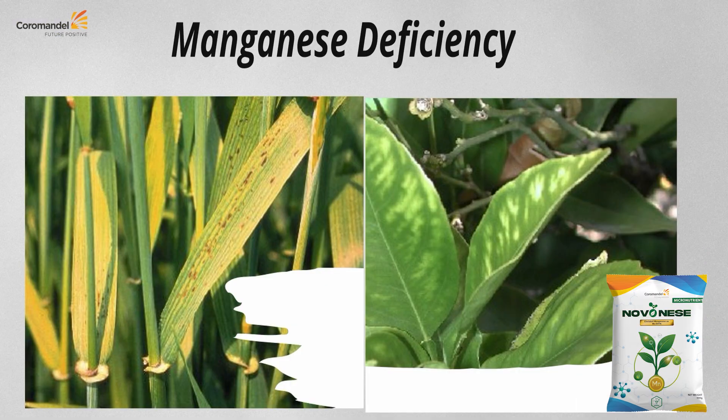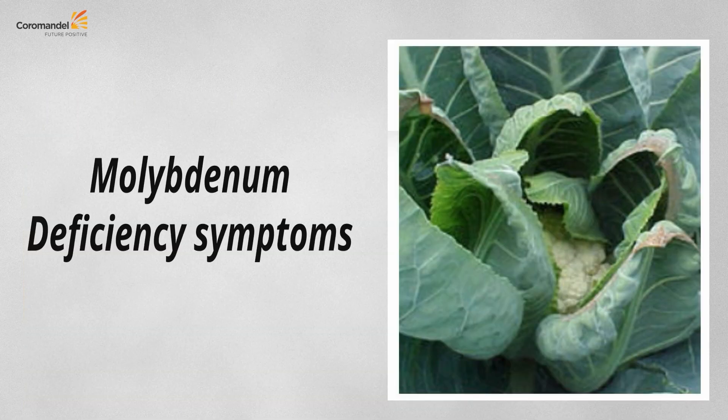Manganese deficiency is very prominent in fruits and vegetables, particularly citrus. Leaves become pale in color, the areas between veins turn yellow — interveinal chlorosis — and leaf size becomes very small, hindering photosynthesis and reducing yield. Manganese deficiency is shown for cereals and citrus crops for clarification.